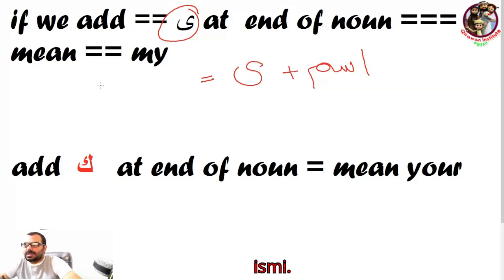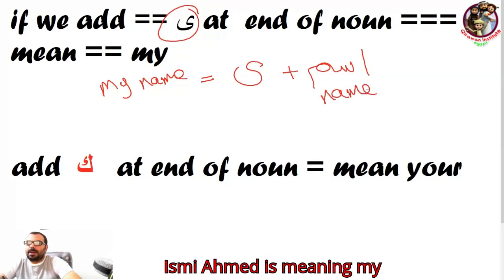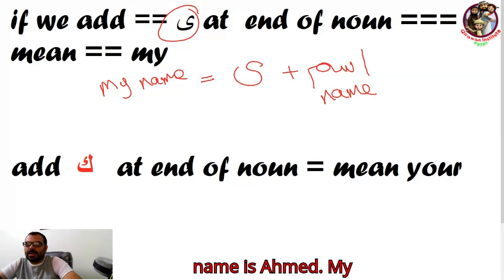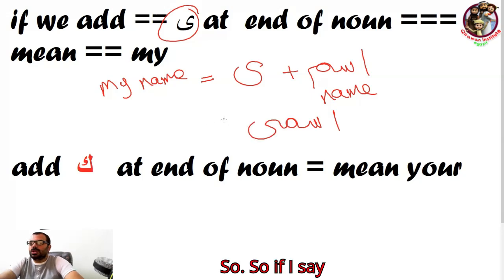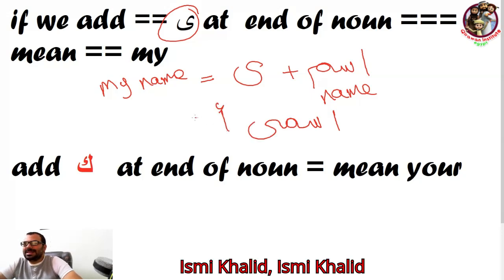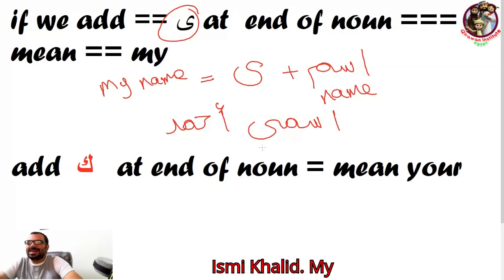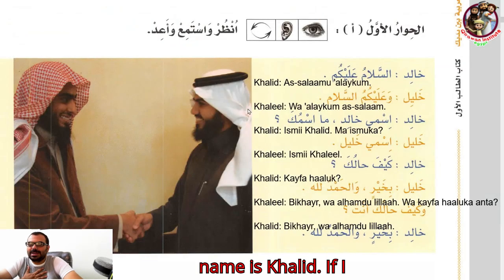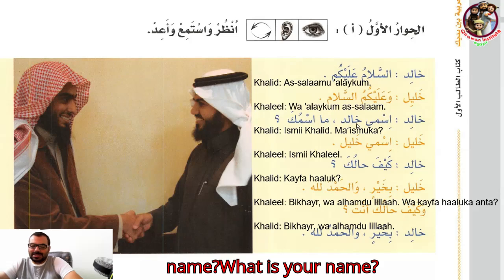So 'ismi Ahmad' means 'my name is Ahmad.' The word 'ismi' means 'my name.' If I ask 'what is your name?' — that is the next thing we learn.